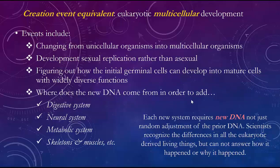So where does this new DNA come from? It has to come from someplace, and there's no apparent reason, but all of a sudden you develop new DNA to run the germinal cells — to make a digestive system, a neural system, a metabolic system, skeletons, muscles, and so on. Every new system you add requires new DNA, not just random adjustment of the prior DNA. Scientists recognize the differences in all the eukaryotic-derived living things but cannot answer how or why it happened.